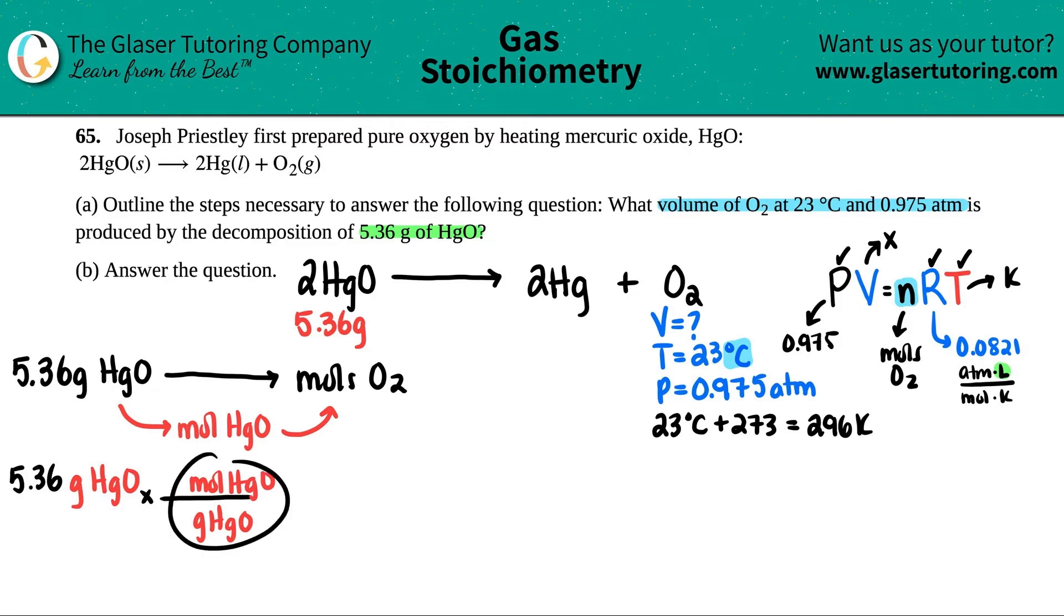This is the periodic table. Mole-to-gram of the same compound is using the periodic table. So one mole of HgO is whatever it is on the periodic table. Periodic table out: we got one Hg, 200.6, plus one oxygen, which is 16. So 216.6. Cancel that out.